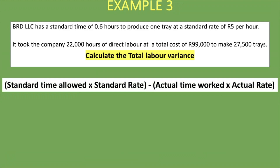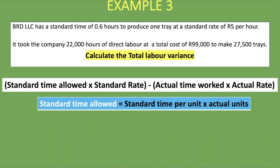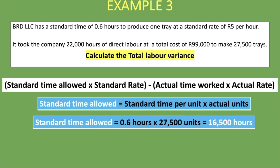Standard time allowed: standard time per unit 0.6 hours × actual units 27,500 trays = 16,500 hours. That means we expected it to take 16,500 hours to produce 27,500 trays. The standard rate is 5 rand per hour.